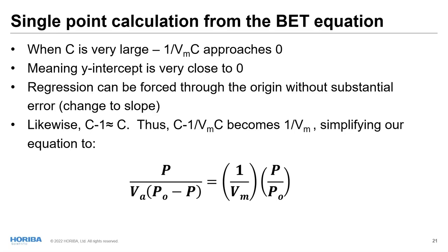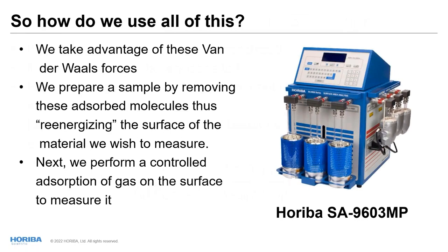A very useful simplification is the single-point BET calculation. When the C value is very large — indicating high heat of adsorption — the term 1/(Vₘc) approaches zero, meaning the y-intercept is near zero and the regression can be forced through the origin without substantial error. Likewise, (c−1) is approximately c when c is large, so (c−1)/(Vₘc) reduces to 1/Vₘ. This simplifies the equation so that with knowledge of the pressures and a single data point, monolayer volume can be readily calculated.